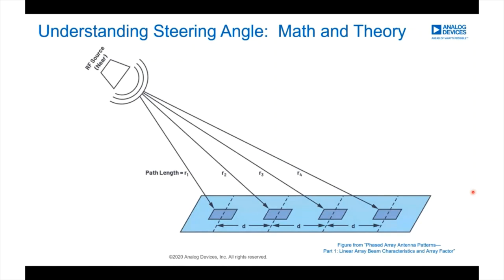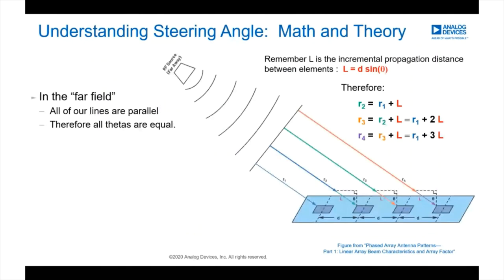We did the simple math for two elements, but how do we go from two elements to 10,000 elements? Right now each element may have a slightly different angle to the RF source, which makes the math hard. But if we assume the RF source is far away, then all our paths to the elements would be approximately parallel. Therefore, all the steering angles — all the thetas — would be approximately equal, and each element would simply have a path length that is D·sin(θ) longer than its neighbor.